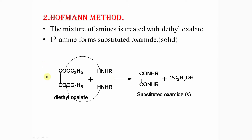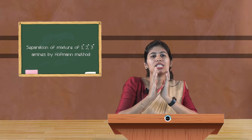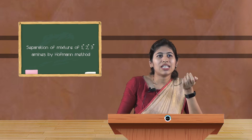The primary amine has the formula R-NH₂, and diethyl oxalate has the formula (CO₂C₂H₅)₂. Two molecules of the primary amine react with one molecule of diethyl oxalate to give substituted oxamide as the product and ethanol as a byproduct. As shown in the slide, ethanol is removed, and the substituted oxamide product formed by the primary amine is in the form of a solid.